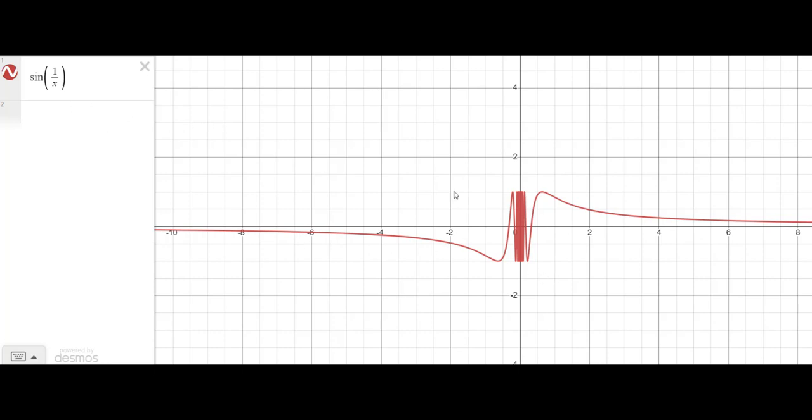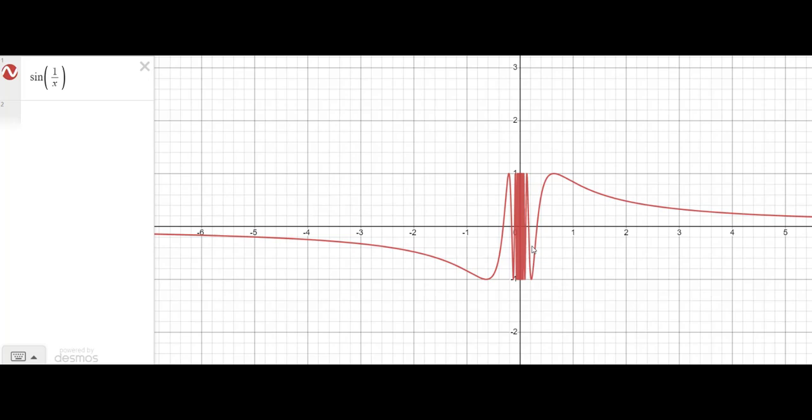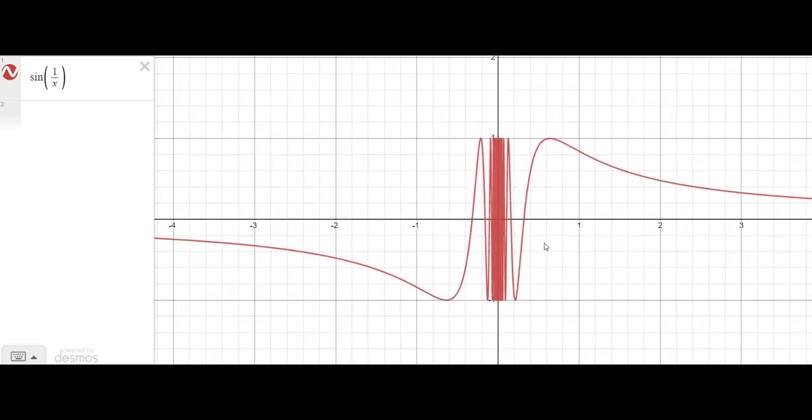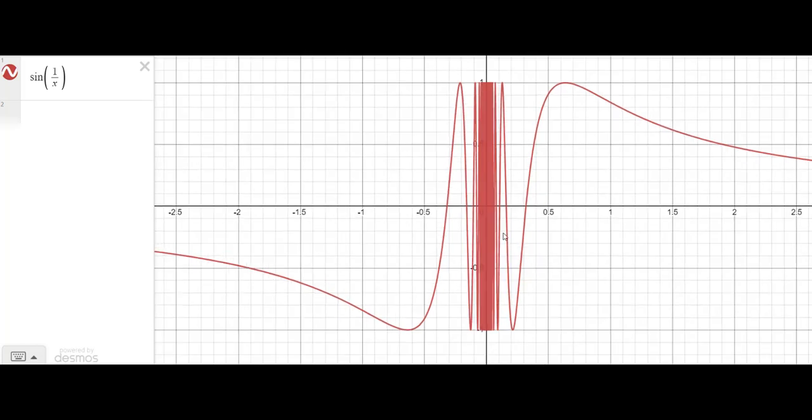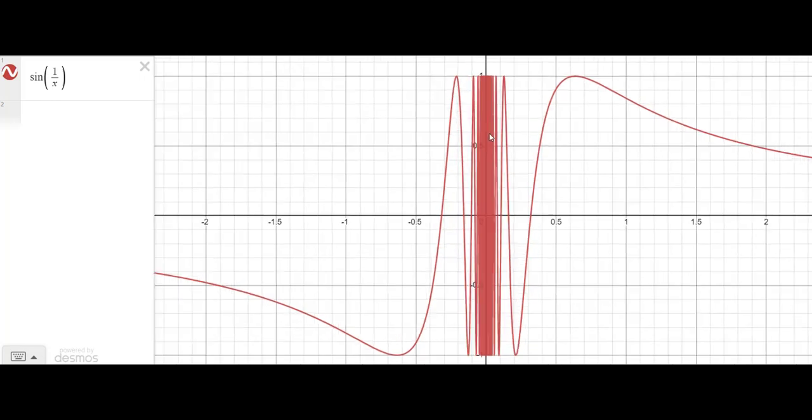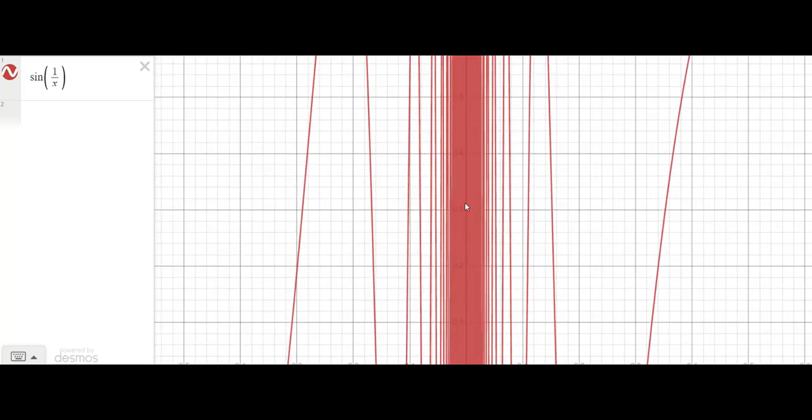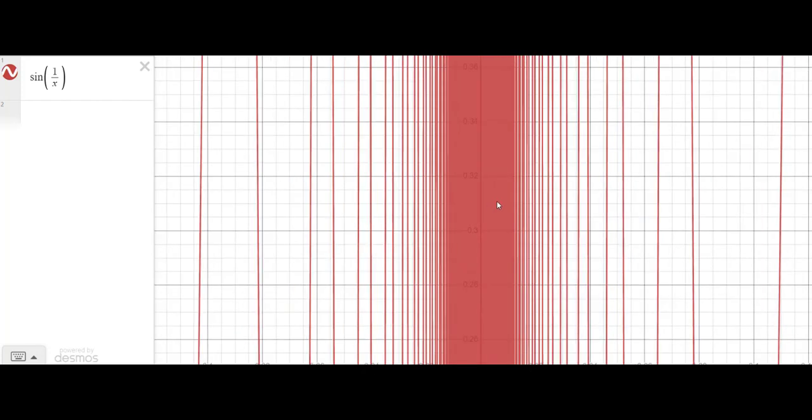But what about as X approaches zero? It looks like Desmos is having some sort of a seizure here. Like, it's just going up and down and up and down. And it can't keep these things far apart that you can actually see the difference. Like, it just looks like, whoa, it just looks like somebody filled it in with a highlighter.